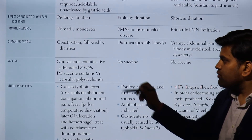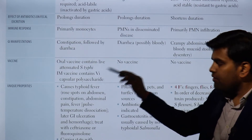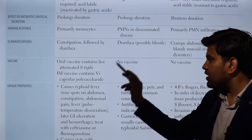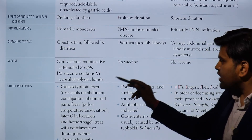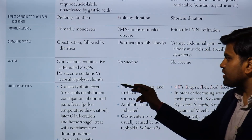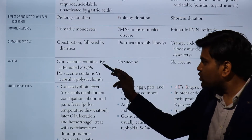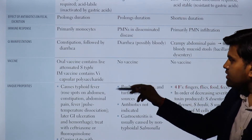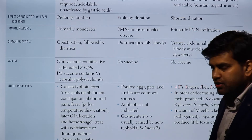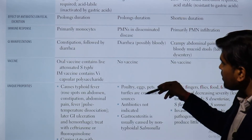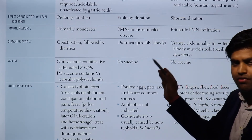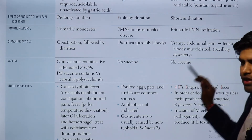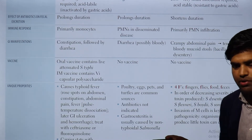Regarding vaccines: Salmonella typhi has two vaccines — an oral vaccine containing live attenuated Salmonella typhi, and an IM vaccine containing Vi capsular polysaccharide. For other Salmonella species and Shigella, no vaccine has been developed.